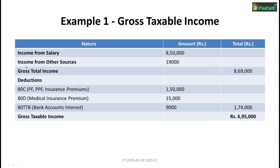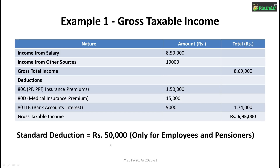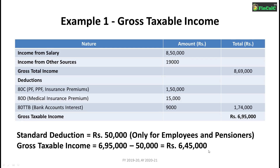As you can see in Example 1, the income from salary is Rs 8,50,000 and income from other sources is Rs 19,000, which makes your gross total income Rs 8,69,000. We have considered deductions of Rs 1,50,000 under Section 80C and Rs 15,000 under Section 80D.